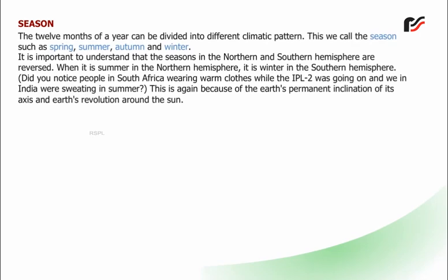Seasons: The 12 months of a year can be divided into different climatic patterns, which we call the seasons — spring, summer, autumn, and winter. It is important to understand that the seasons in the Northern and Southern Hemispheres are reversed. When it is summer in the Northern Hemisphere, it is winter in the Southern Hemisphere. Did you notice people in South Africa wearing warm clothes while IPL was going on and we in India were sweating in summer? This is because of the Earth's permanent inclination of its axis and Earth's revolution around the Sun.